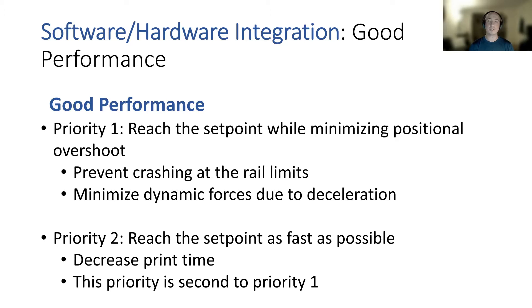The second priority is reaching your set point as fast as possible. When you do this, it's going to decrease your print time. Just one thing to remember is this is really a nice to have feature, so it is second priority to priority one.